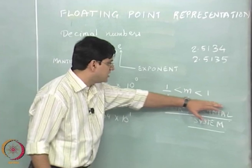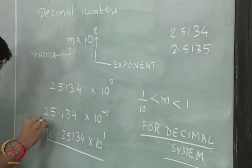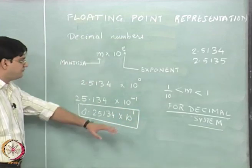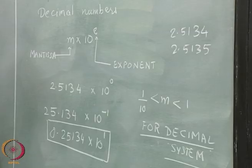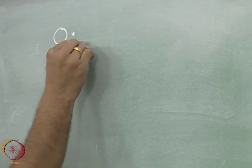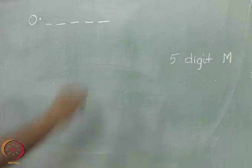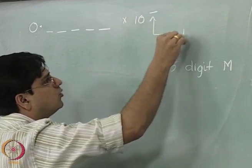With this particular definition that M lies between 0.1 and 1, the correct representation of our number is 0.25134 multiplied by 10 to the power 1. In our decimal computer, any number will be represented as 0.dash-dash-dash-dash-dash — we have 5 blanks for the mantissa — multiplied by 10 to the power dash, using 1 digit for the exponent.